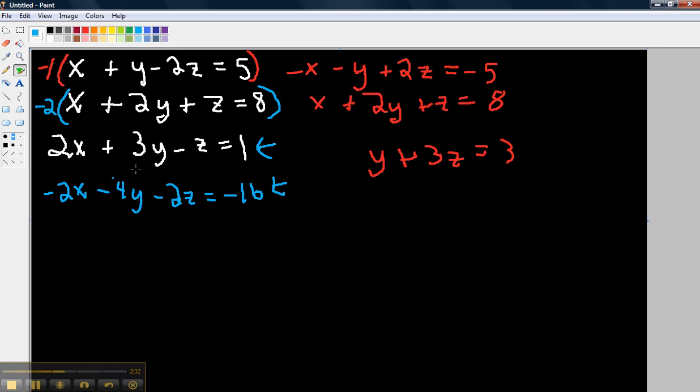They cancel. I'm going to add 3y and negative 4y, which is negative y. Here I'm going to add these. I get negative 3z. Add 1 and negative 16, which is negative 15 here.